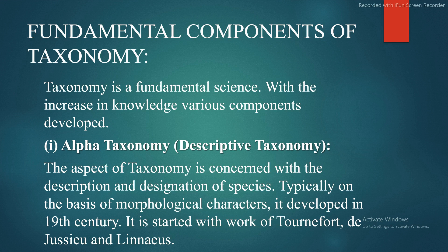Fundamental components of taxonomy: taxonomy is a fundamental science, and with increases in knowledge various components have been developed. Number one is alpha taxonomy, also called descriptive taxonomy. This aspect of taxonomy is concerned with the description and designation of species, typically on the basis of morphological characters. It developed in the 19th century, starting with the works of de Jussieu, de Candolle, and Linnaeus.